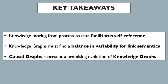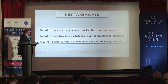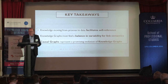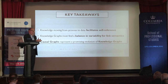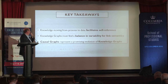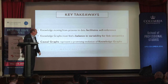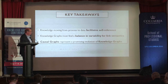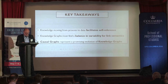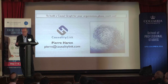To conclude: the more we move knowledge from processing to powerful representations such as causal graphs, the more we will be able to have the ability of self-reference. We truly cannot go the LISP path of a variety of link semantics, because every time you add more complexity into the links, you remove your long-term ability to do self-referencing. I hope I have teased your interest in causal graphs, and I'm at your disposal for these two days.